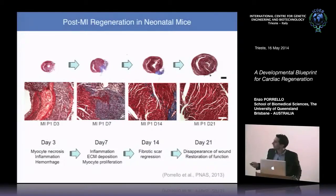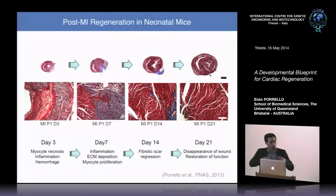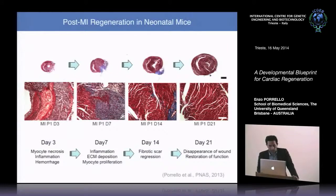Importantly, this regenerative response in the neonatal heart is associated with a robust and widespread activation of cardiomyocyte proliferation at day 7 following injury. By day 21, we see little evidence of fibrosis, with only a small region of scar tissue around the permanent ligature.